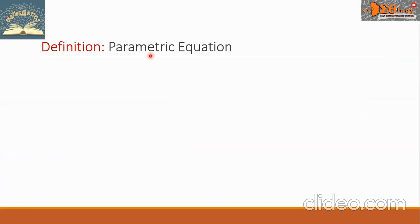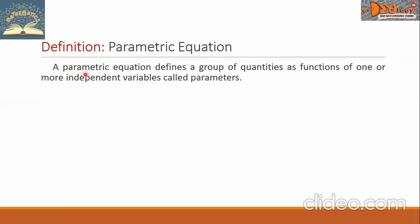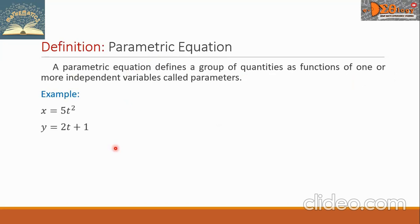Let us first define parametric equation. A parametric equation defines a group of quantities as functions of one or more independent variables called parameters. For example, we have a parametric equation: x equals 5t squared, y equals 2t plus 1. In this equation, we call t the parameter.